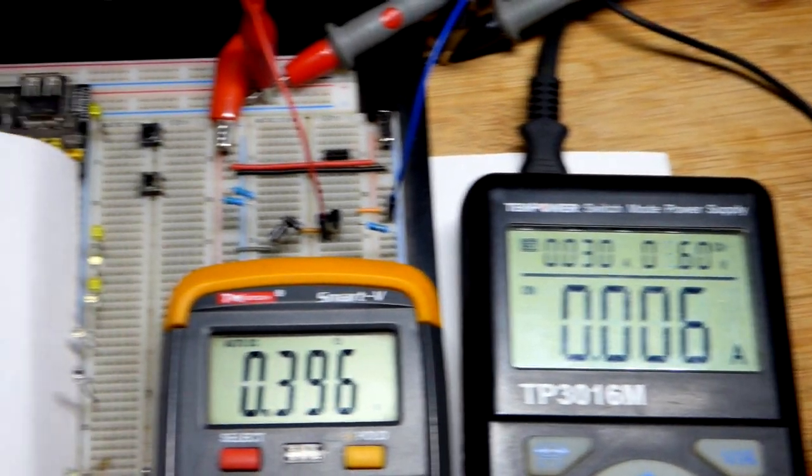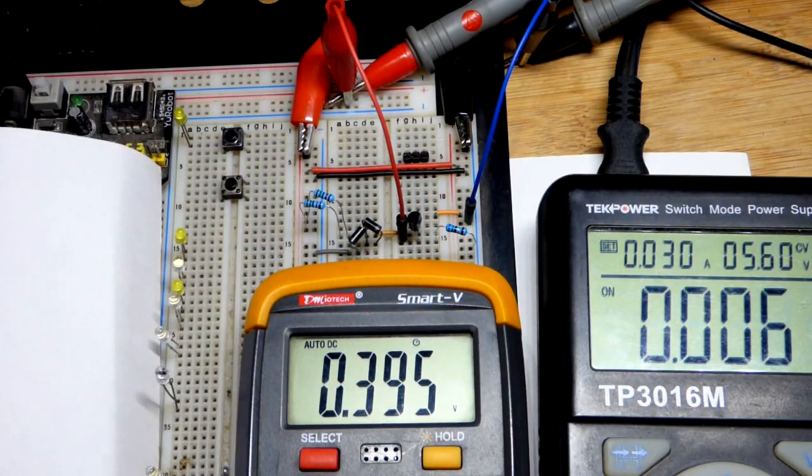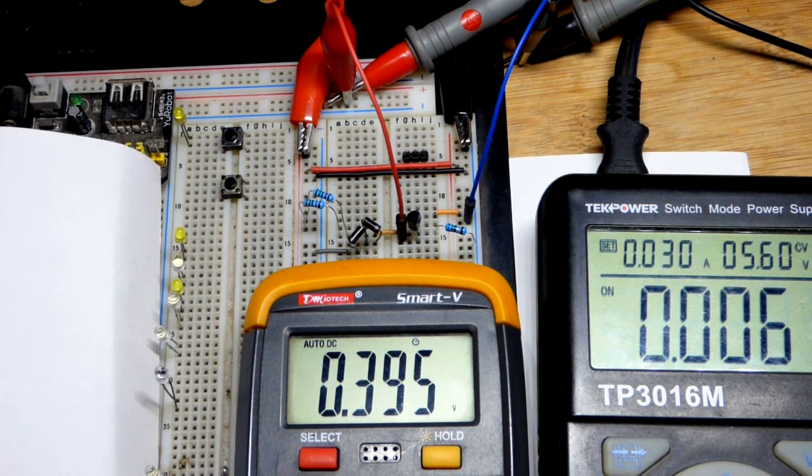So even though I dropped the voltage in basically a third, we had the same amount of current flowing through the load until I yanked the load, of course. Then there was no path for current to flow.